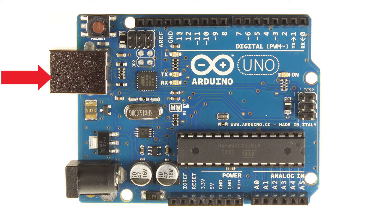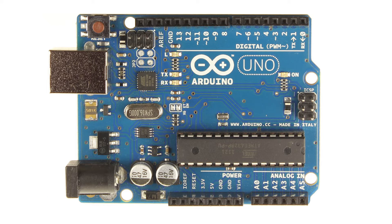The USB port helps to program the board and also to power it. The Arduino also has a power port in case you want to power it through a battery or AC/DC adapter. The Arduino board operates at 5V but can withstand a maximum voltage of 20V, as it has a built-in voltage regulator. The reset switch sends a pulse to the reset pin of the microcontroller and the program restarts, which can be useful if your code doesn't repeat but you want to test it many times.